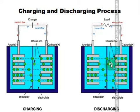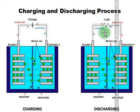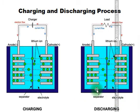During charging, an external battery source is used, and during discharging, an external load resistance is used. The anode and cathode are present in both cases, with a separator between them. Based on these reactions, the charging and discharging processes take place.